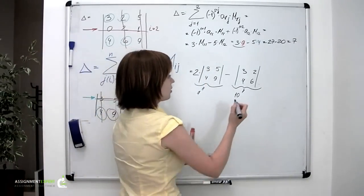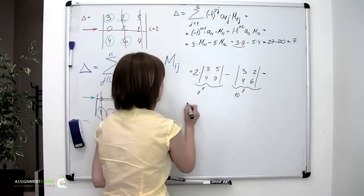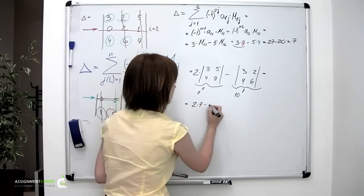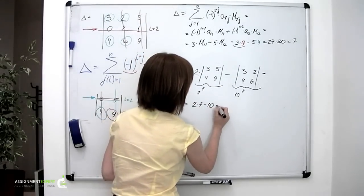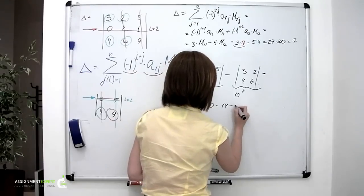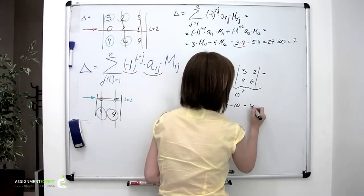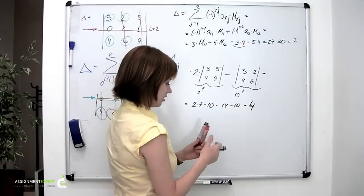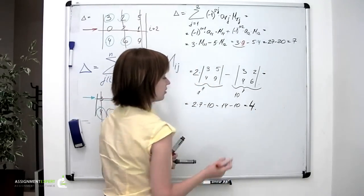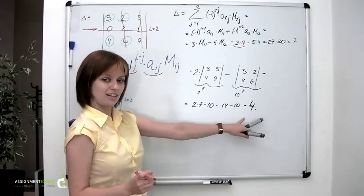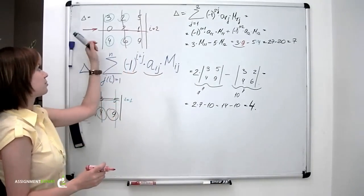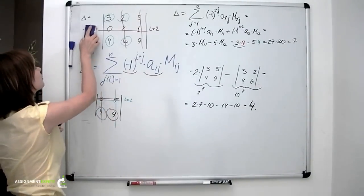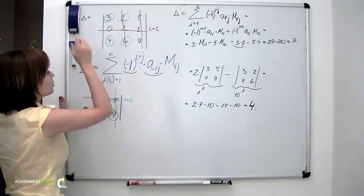This means that we can go on with our computing: 2 times 7 minus 10, 14 minus 10 is 4. And this is the answer to our problem right here. So our delta equals 4.